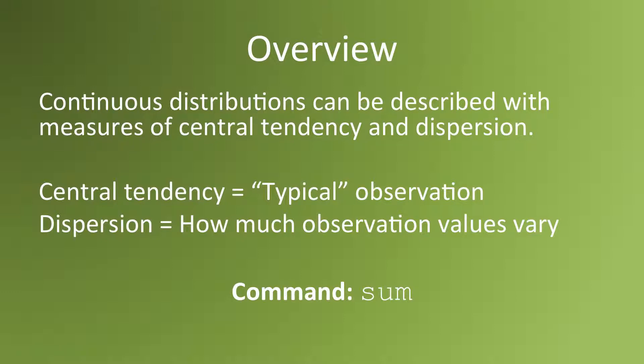Central tendency measures give you an idea of what a typical observation looks like. Dispersion measures ask how spread out the values are. To get either set of measures, we use the command sum, which is short for summarize.